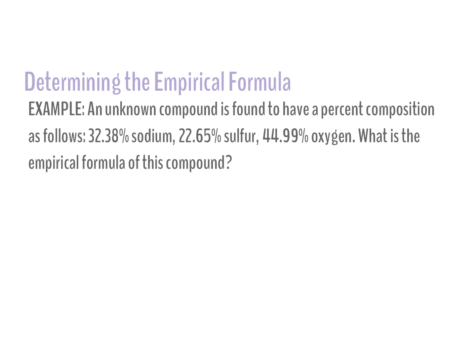An unknown compound is found to have the following percent composition: 32.38% sodium, 22.65% sulfur, and 44.99% oxygen. What is the empirical formula of the compound? I'm going to list out my knowns: 32.38 grams sodium (Na), and I'll draw a T-chart because I know I'll need to convert to moles.